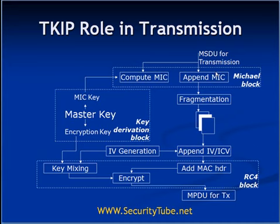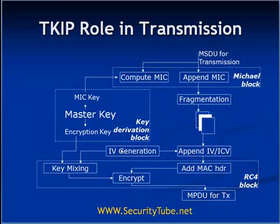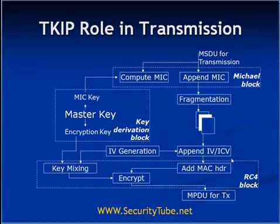MIC appears only once per MSDU and not per MPDU. So at this point you have the MSDU appended with the MIC as clear text. This frame is given to the fragmentation block, and if required, fragmentation is done. There is a separate IV generator — a monotonically increasing function — so for every packet the IV generator increments. The IV is appended to the fragmented packet and the ICV (integrity check value) is computed. For every packet you have: IV, fragmented clear text packet, and ICV.